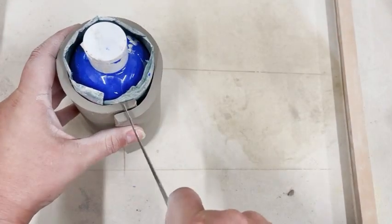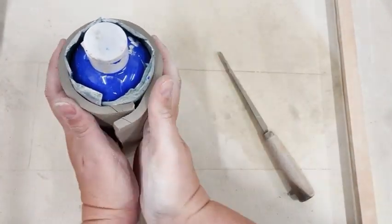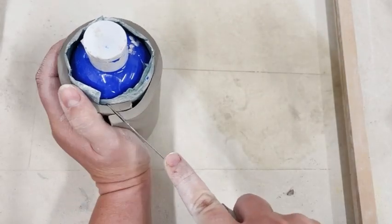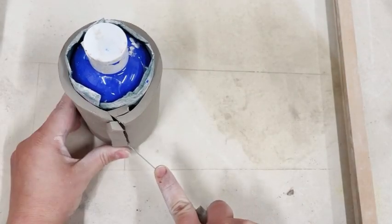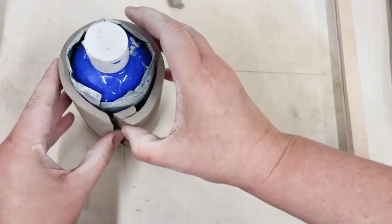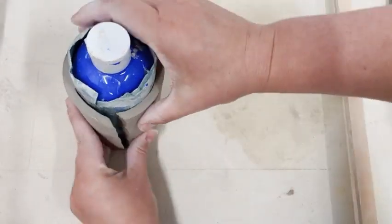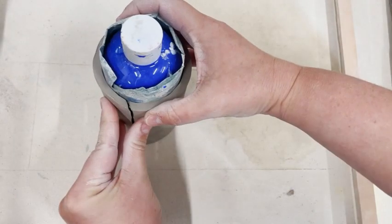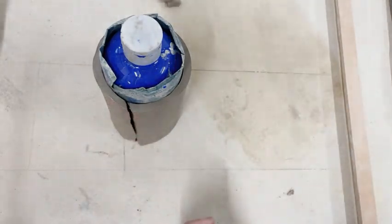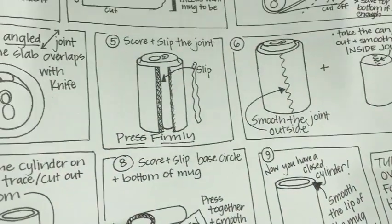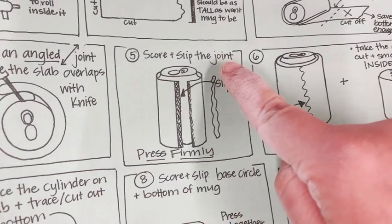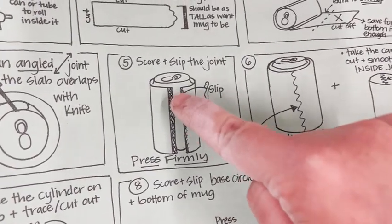Now I'm going to cut an angled joint. We call this a miter joint. So instead of going straight up and down, I'm going to set it to the side and cut straight down. Take off those extra pieces. That gives me a little bit of extra surface area to slip and score on to have a good attachment. Now I'm going to slip and score that joint and press them together firmly.